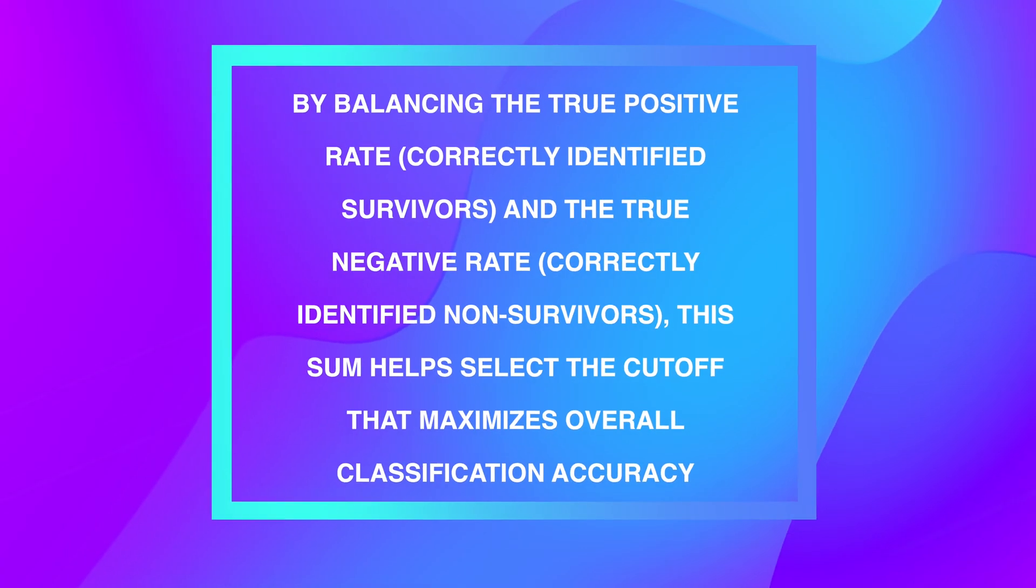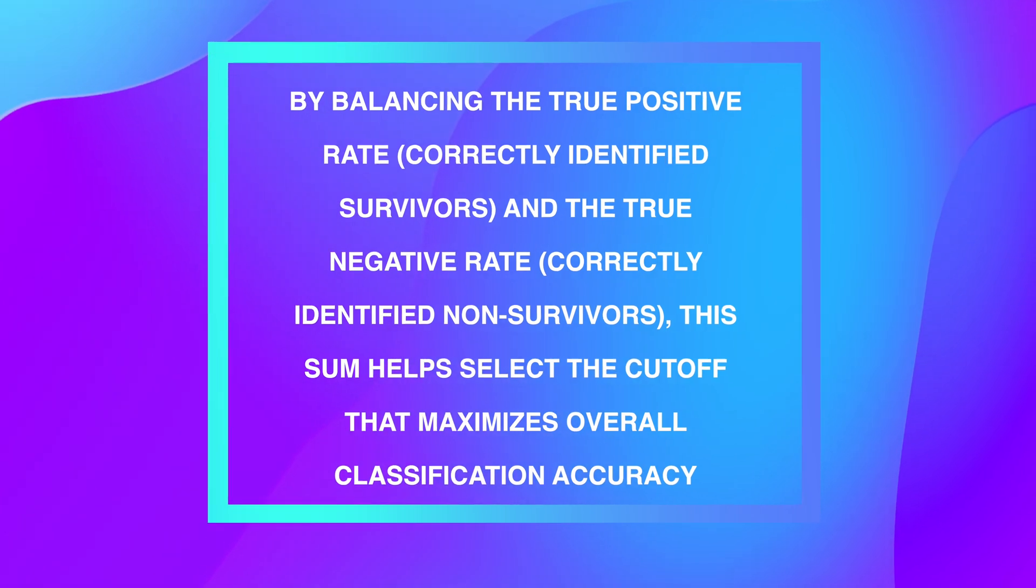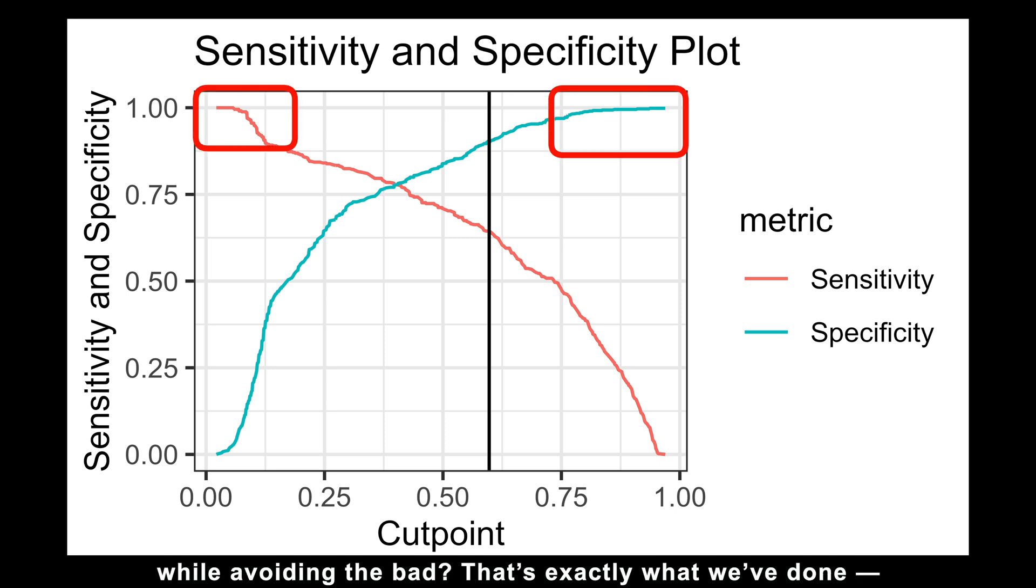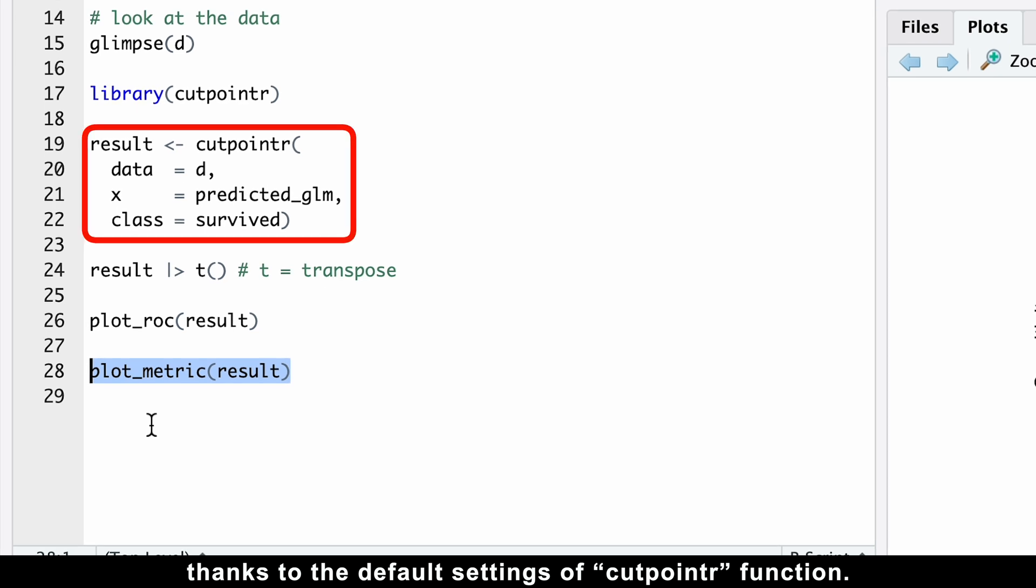Why is this important? Well, by balancing the true positive rate, correctly identified survivors, and the true negative rate, correctly identifying non-survivors, this sum helps select the cutoff that maximizes overall classification accuracy. Remember when we talked about catching the good stuff while avoiding the bad? That's exactly what we've done, thanks to the default settings of cutpointr function.